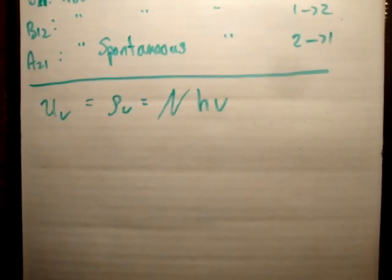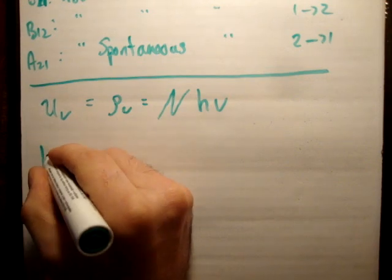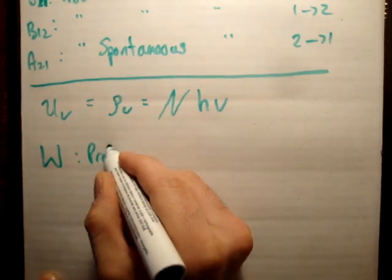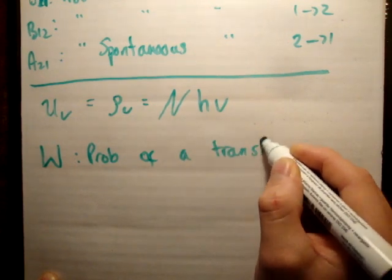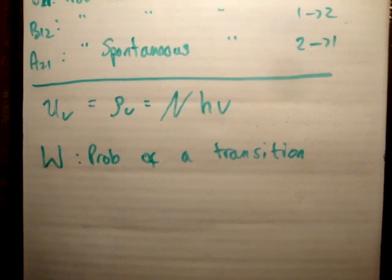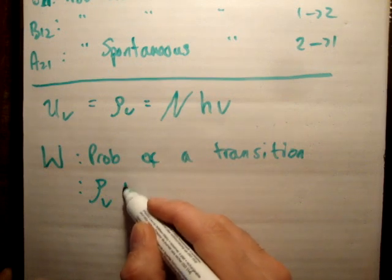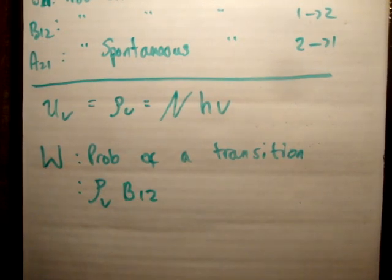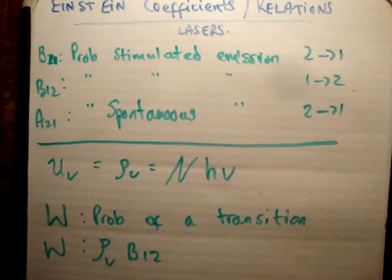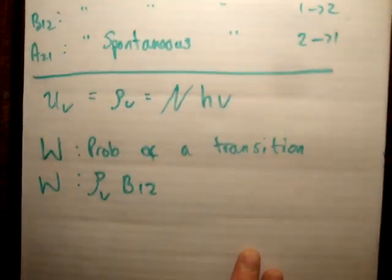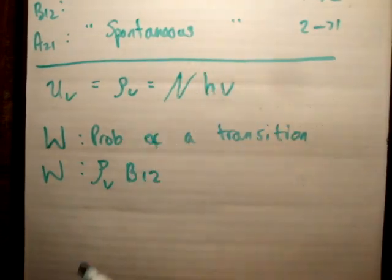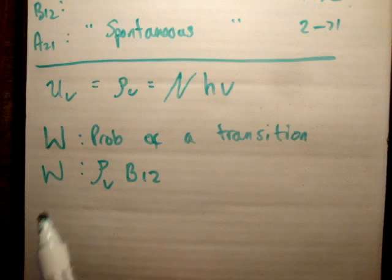What if we look at the probability of a transition? There is another coefficient — I'll call it w — which is the probability of a transition. The probability of transition is going to be equal to the energy density times the probability of transition from level 1 to level 2. So this is going to be the probability of something being emitted; that's B12 from a lower to a higher energy level. If you multiply that by the energy density, which takes into account the number of photons available to make a transition, we have the probability of a transition occurring.